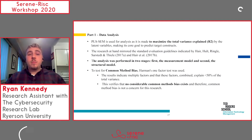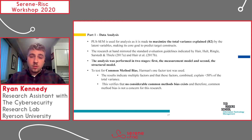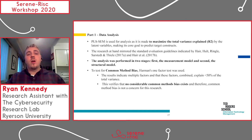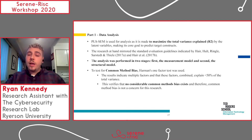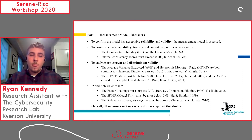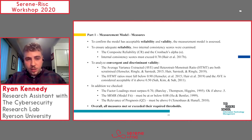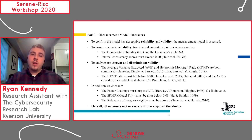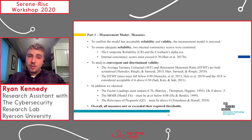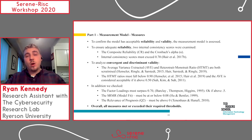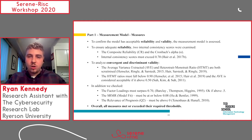PLS-SEM was used to analyze the quantitative results. We followed the standard guidelines by Hair et al., going with the measurement model followed by the structural model. We also tested for common method bias — the variance attributed to the model itself rather than what you're trying to measure — and found no considerable common method bias. For the measurement model, in terms of reliability we looked at composite reliability and Cronbach's alpha. For convergent and discriminant validity, we looked at the HTMT ratio and average variance extracted. We also checked factor loadings, model fit using the SRMR measure, and the relevance of prognosis or Q-squared. All variables met acceptable thresholds.